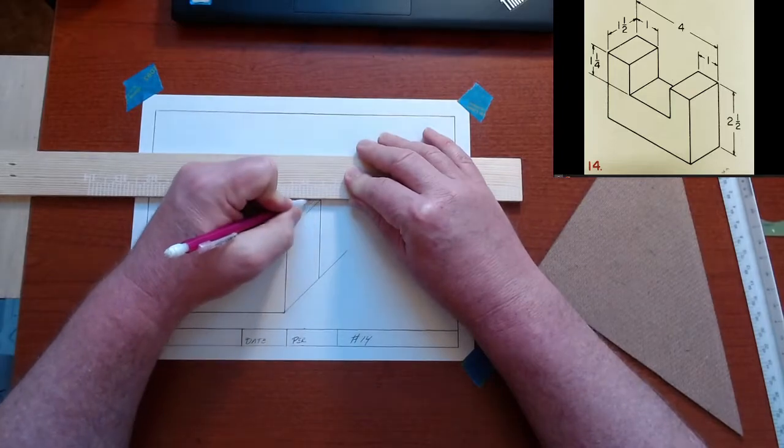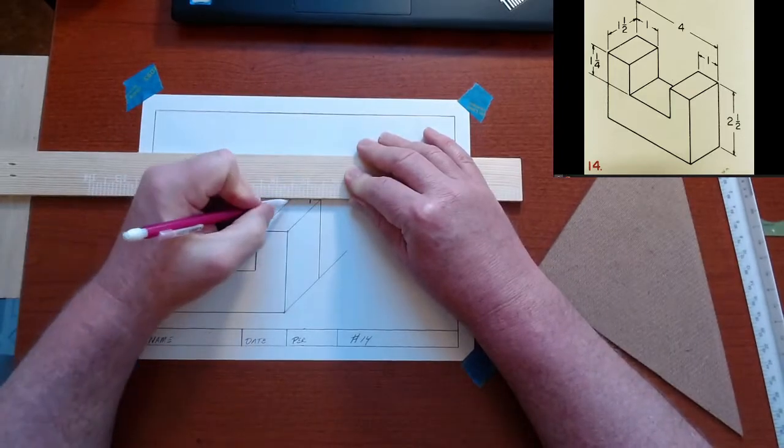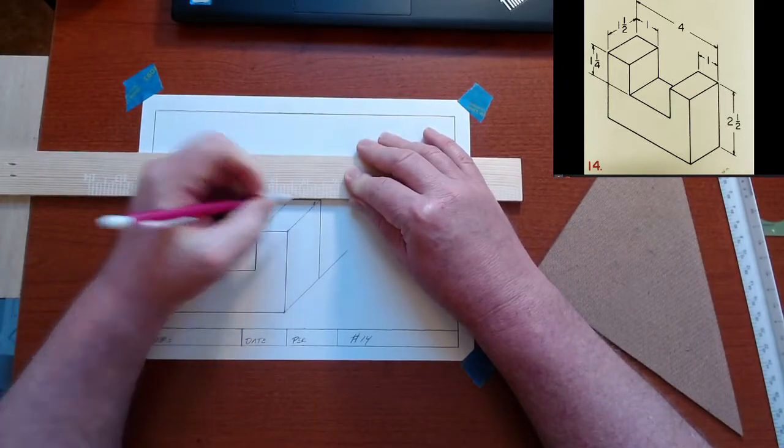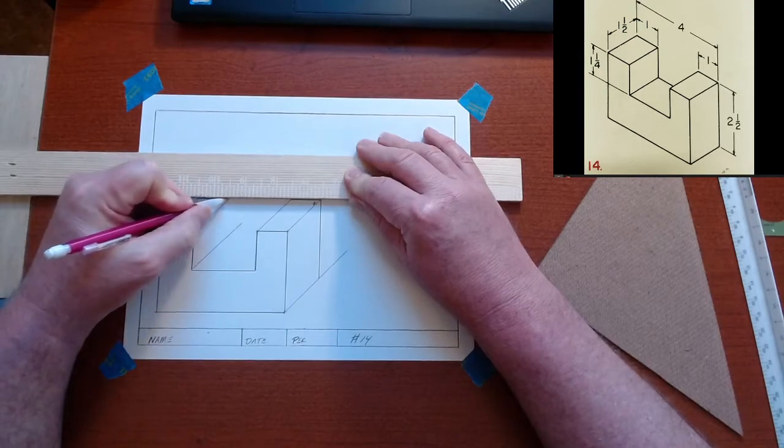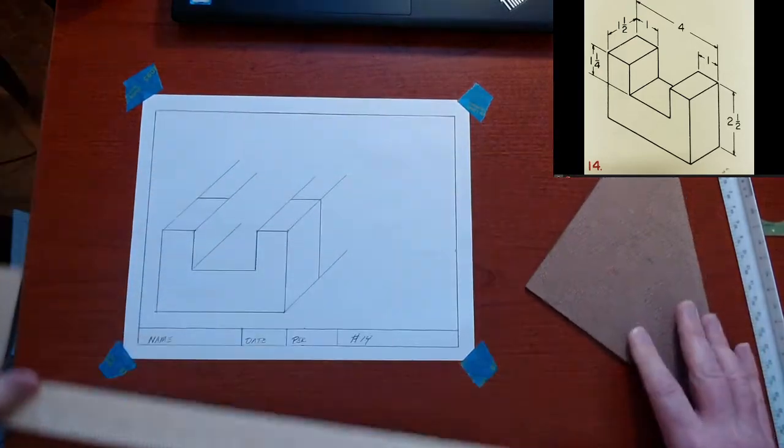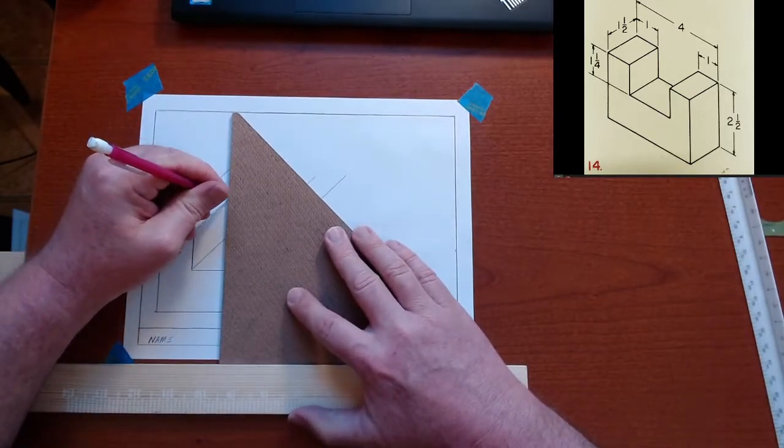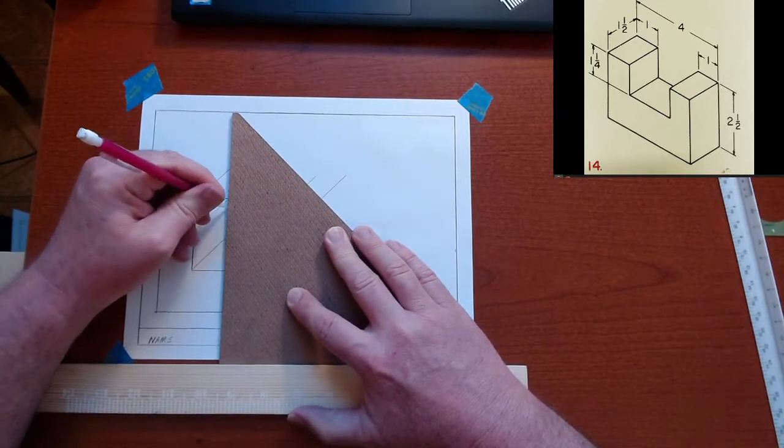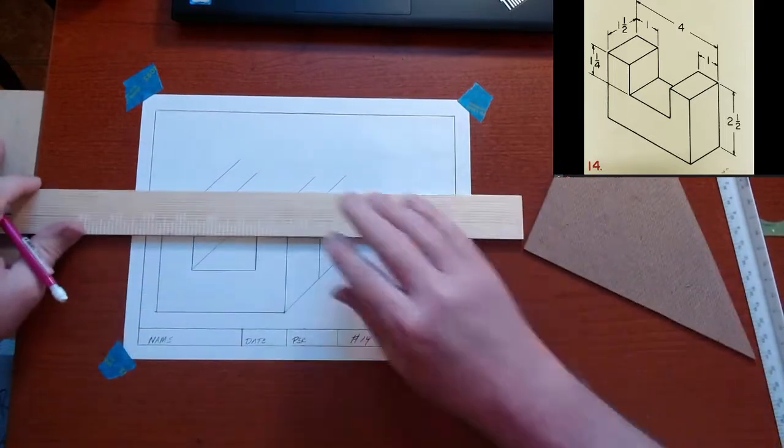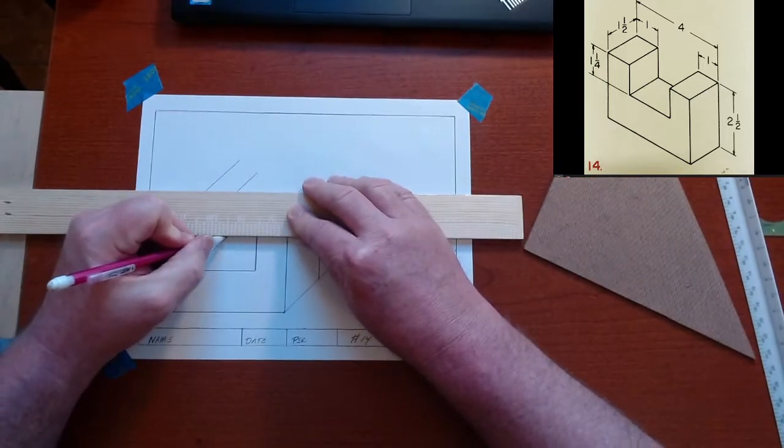And then I can come across here. Whoops. If I don't break my lead, come across there, come across here. Now you notice those lines are quite a bit darker than I was writing because I know these are not going to get erased. So I'm going straight to visible lines instead of construction lines on those.